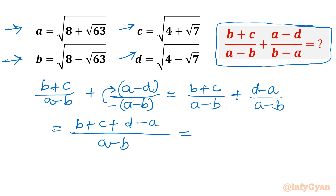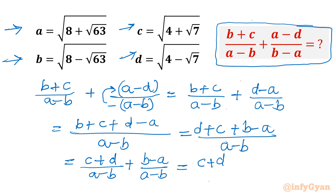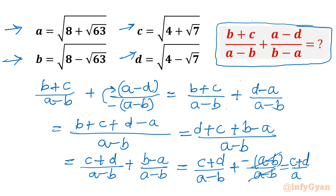Now let us collect terms from the numerator. I can write (c+d) plus (b-a), all divided by (a-b). Splitting the fraction gives (c+d)/(a-b) plus (b-a)/(a-b). Taking minus common from the second rational term, (b-a)/(a-b) becomes −1. So ultimately we are calculating (c+d)/(a-b) − 1. This is the value we have to find out.